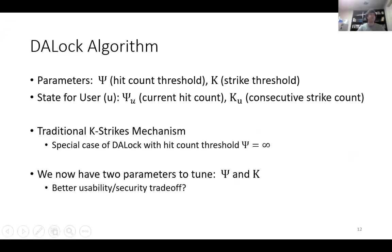Observe that the traditional K-strikes mechanism is simply a special case of DA-Lock with the hit count threshold set to infinity. DA-Lock gives us two parameters instead of one to tune — the hit count and the strike count. The key question is: can we obtain better usability and security tradeoffs by tuning both parameters?